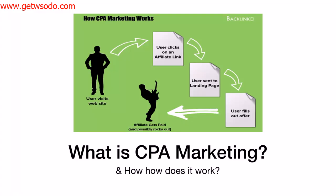What is CPA Marketing? How does it work? CPA Marketing works like this: whenever you're part of an affiliate network, you simply grab a link and promote that link. The user clicks your affiliate link, gets sent to a landing page, fills out an offer, and the affiliate — which is you — gets paid. So it's really that simple. The visitor goes to your CPA offer, fills it out, and you as the affiliate get paid.